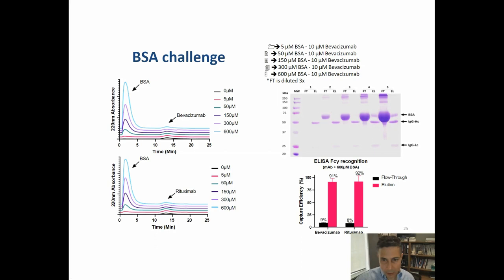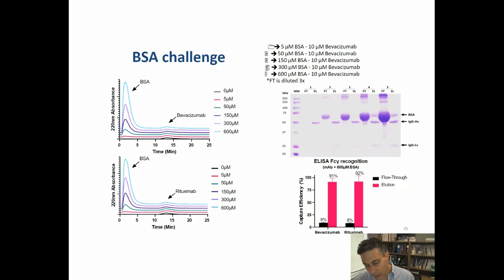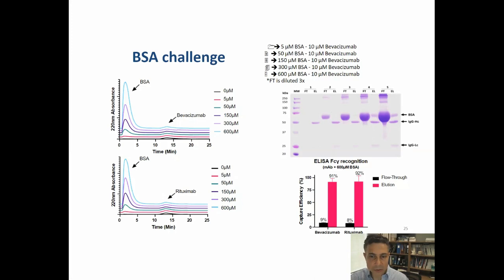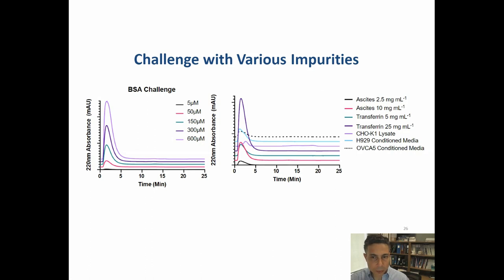Rituximab is also captured under high contaminant concentrations. There is some reduction in capture efficiency when contaminant concentration is very high — albumin is sticky and likely blocks the resin surface, preventing the nucleotide binding site ligand from interacting with antibodies. Hence, purification efficiency is reduced to 91% and 92% for bevacizumab and rituximab respectively, compared to approximately 99% at lower contaminant concentrations.